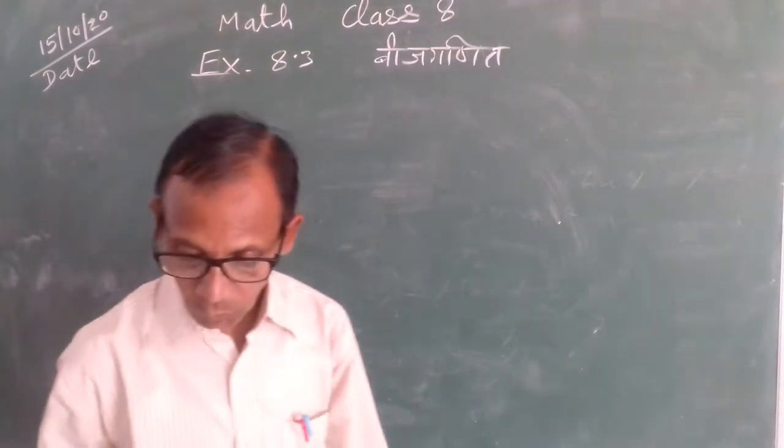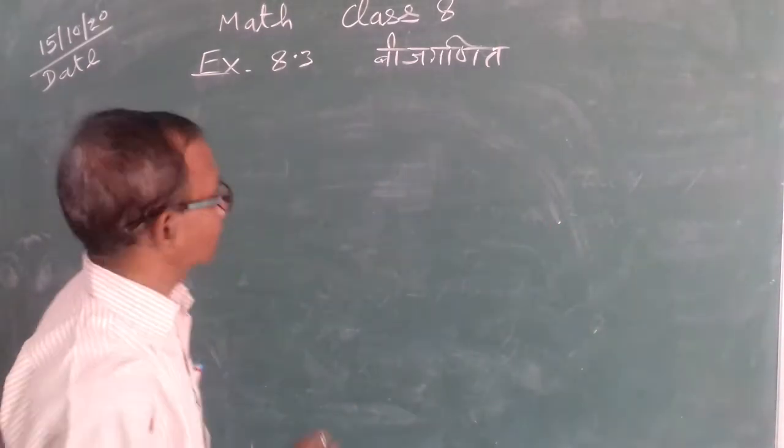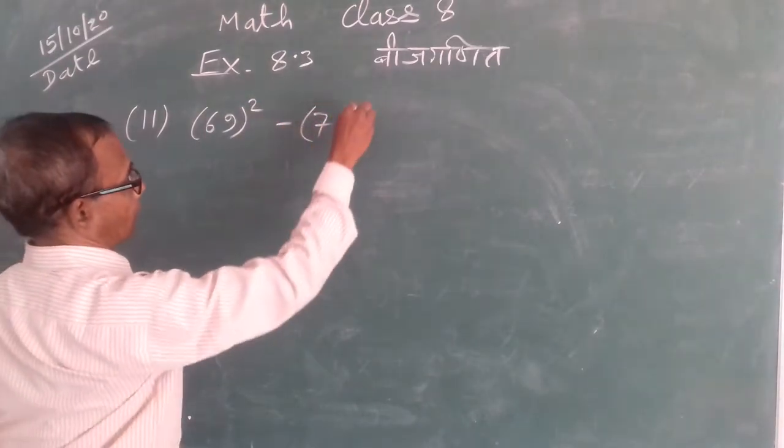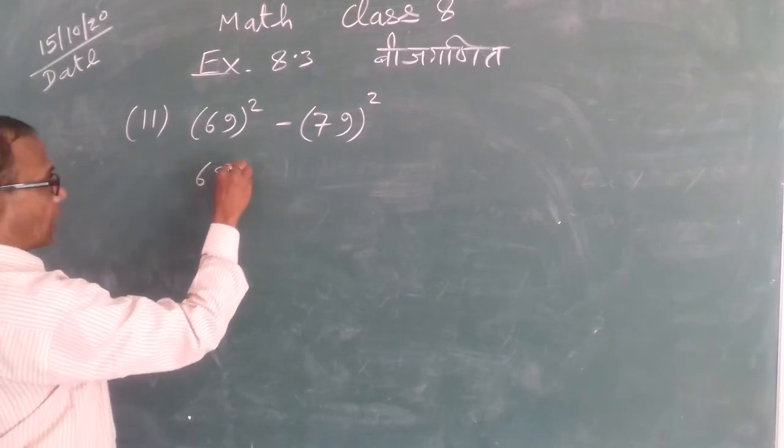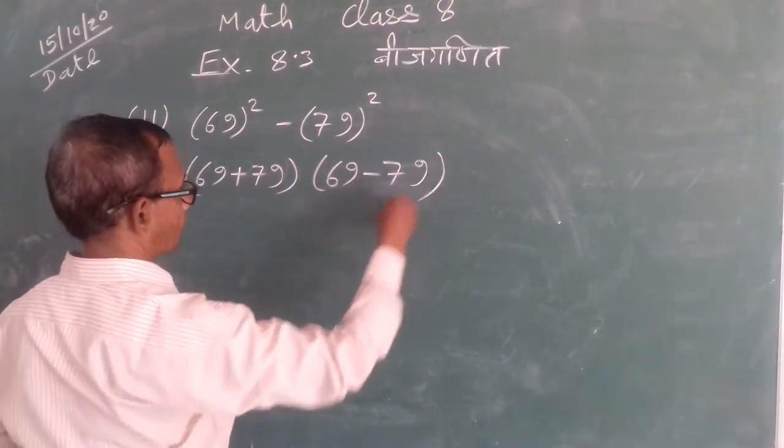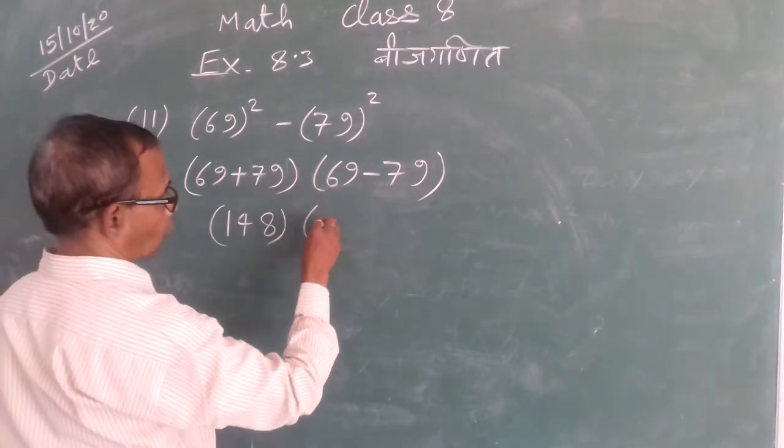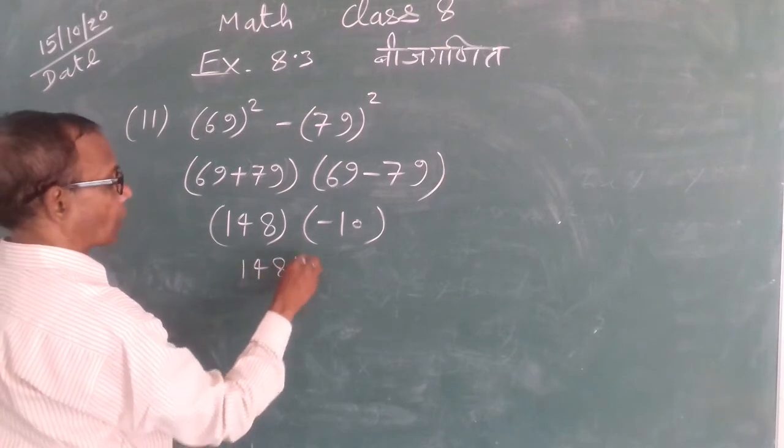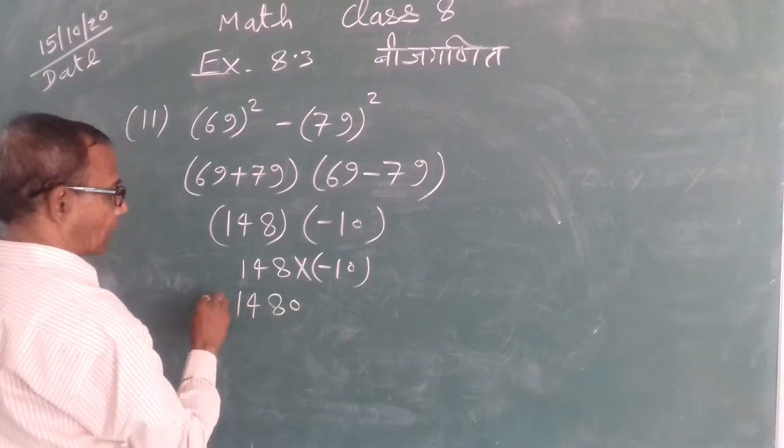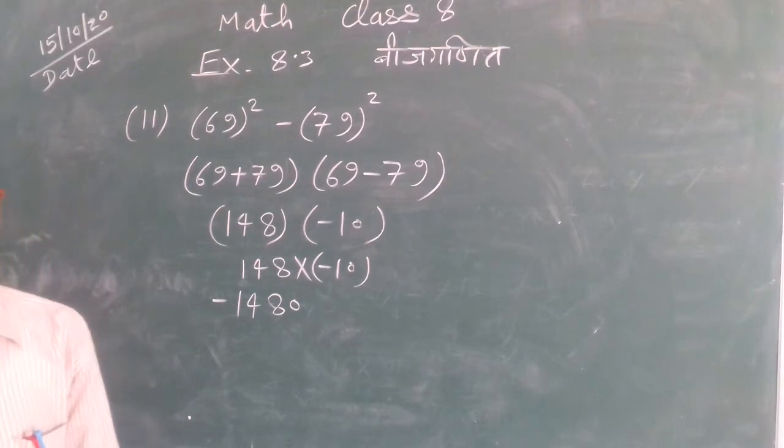Next problem: 69² - 79². This is 69 + 79 times 69 - 79. That's 148 times minus 10, which equals minus 1480. Answer: minus 1480.